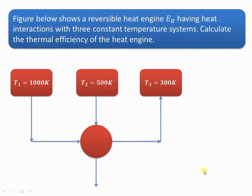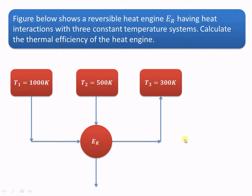As shown, there are two sources: T1 is equal to 1000 Kelvin, T2 is equal to 500 Kelvin, and this is the sink where the heat is rejected, T3 is equal to 300 Kelvin. From these two sources heat is supplied as shown by these arrows, and heat is rejected to the sink maintained at T3 equal to 300 Kelvin.